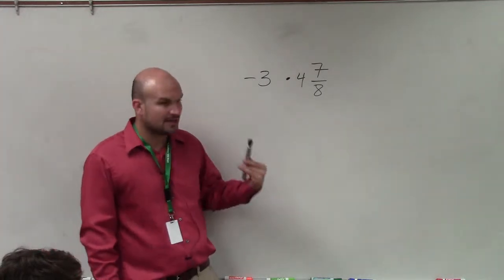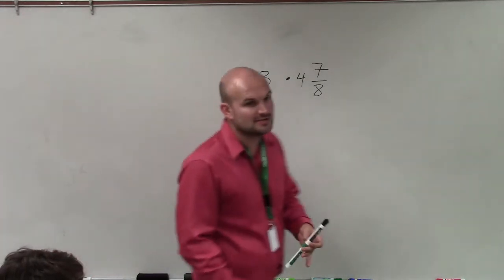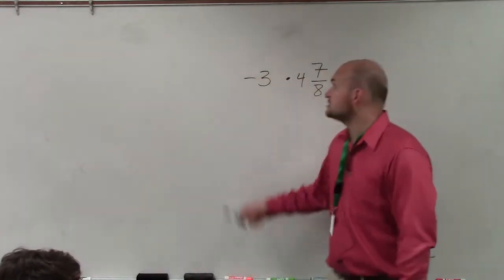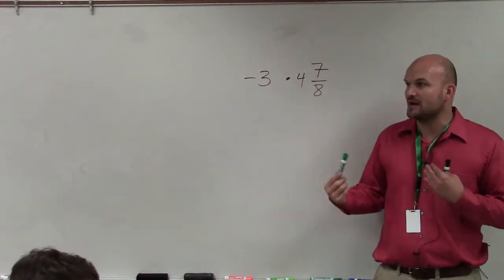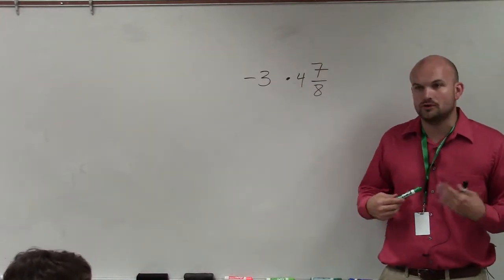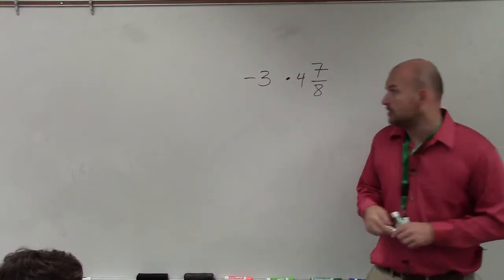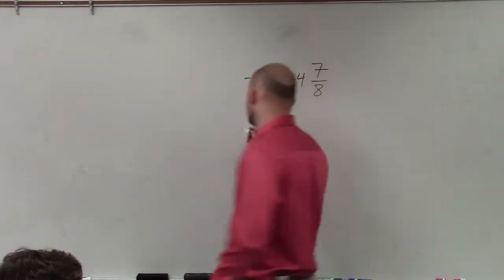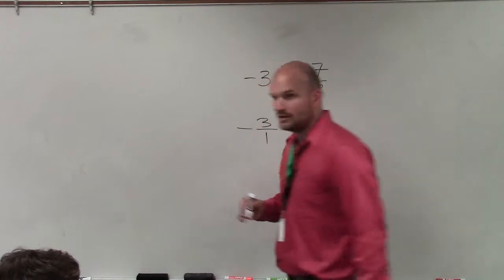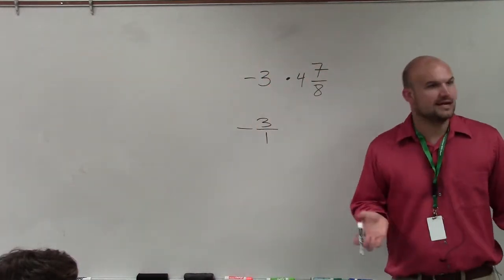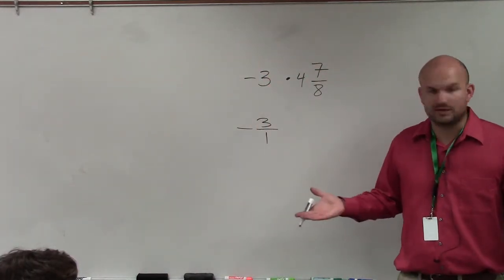We're still going to multiply fractions by fractions. The main important thing is we want to convert our whole number to a fraction. Whenever we want to multiply a fraction times a whole number, just convert your whole number to a fraction. That's very easily done — just put it over 1, because negative 3 divided by 1 is still negative 3.